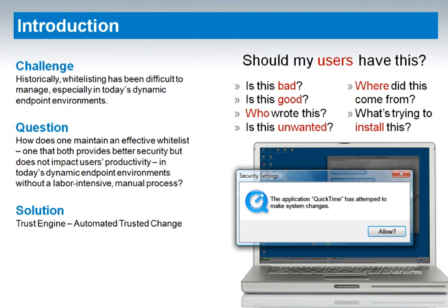Whitelisting is known to be effective, but difficult to manage, especially in today's dynamic environment. In most organizations, the endpoint is constantly changing as applications are patched, updated, or upgraded. So, Chris, how does one maintain an effective whitelist — one that both provides better security but does not impact end-users' productivity — in this situation without a labor-intensive manual process?